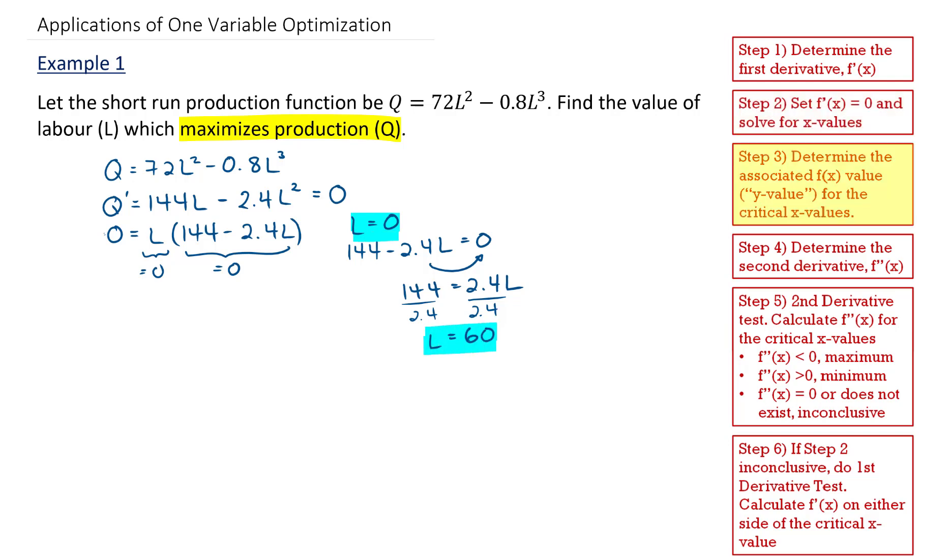The next step is to determine the Q value associated with these L values. So I'm going to take my Q equation right here and I'm going to substitute L equals 0 into it. So Q of 0 is going to be equal to 72 times 0 squared minus 0.8 times 0 cubed. And what I get is 0.